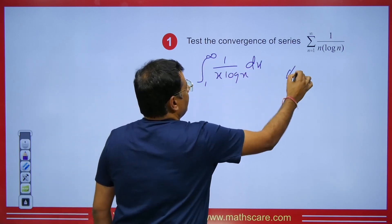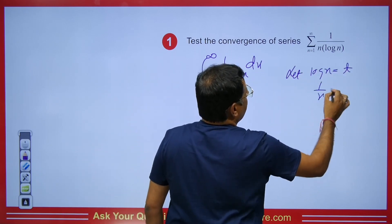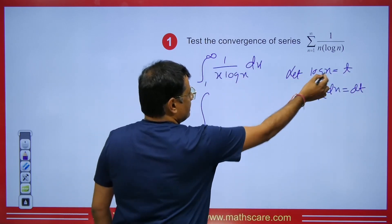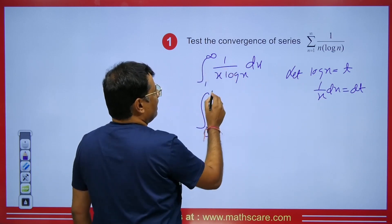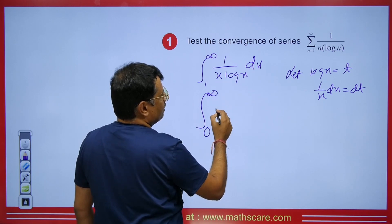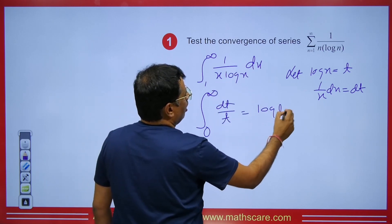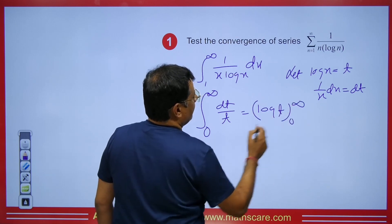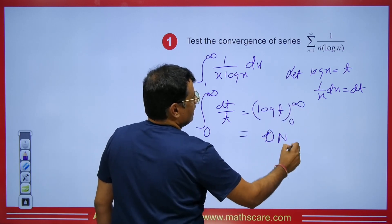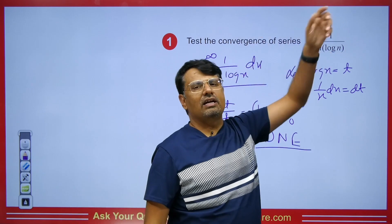We use the substitution log x = t, so (1/x) dx = dt. When we put x=1, log 1 = 0, and at infinity it is infinity, so the limits become 0 to infinity and the integrand becomes dt/t. If we integrate this, we get log t from 0 to infinity. Putting log infinity, we get 'does not exist,' which means this series is divergent.